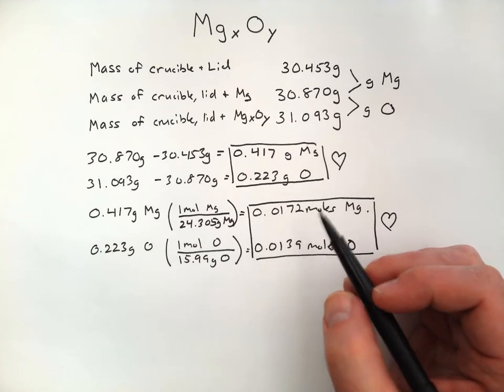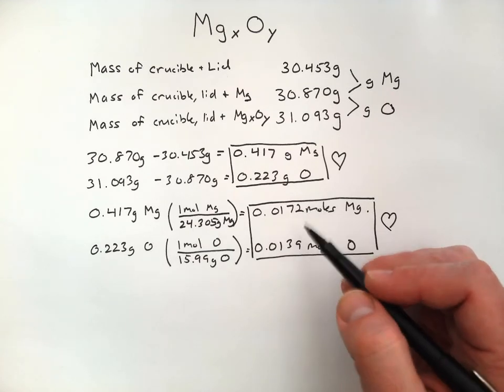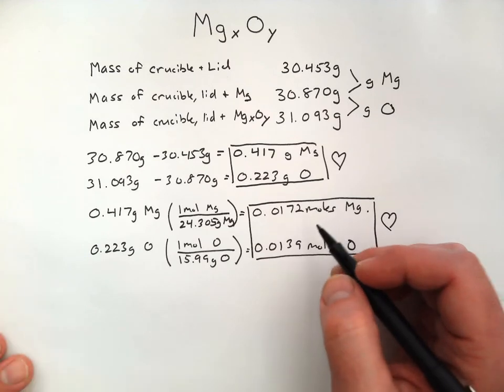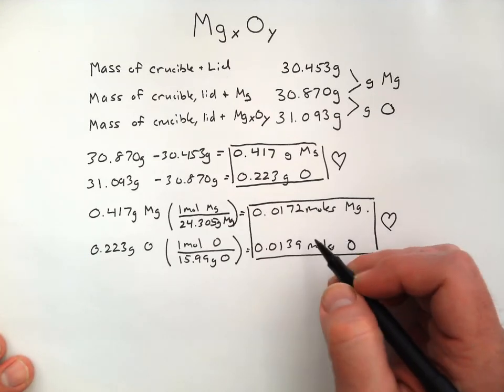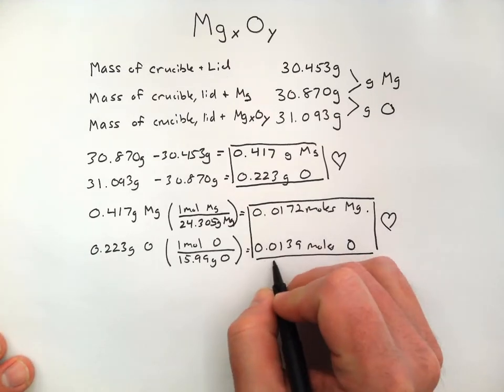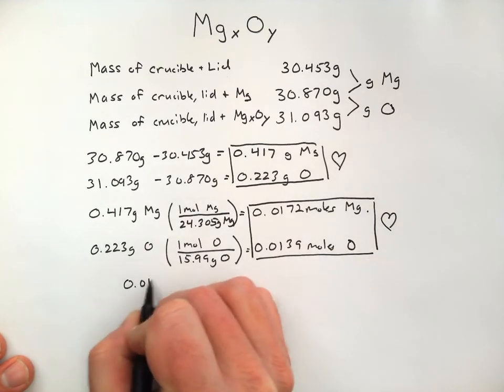And, I can already see that there's some error in here. Good job, Mr. Rudolph. And, what I need to do is figure out the lowest whole number ratio of these. The easiest way to do that is to divide them both by the smaller of the two.